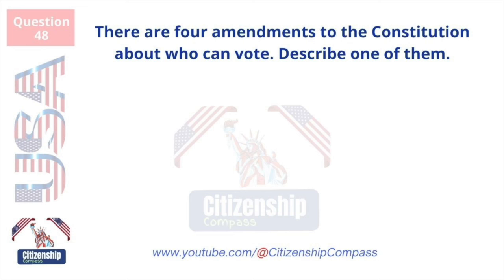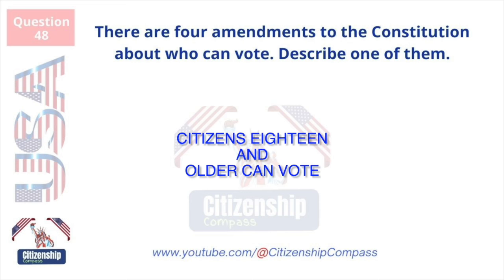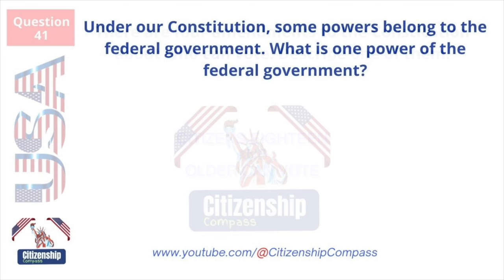There are four amendments to the Constitution about who can vote. Describe one of them. Citizens 18 and older can vote. Under our Constitution, some powers belong to the federal government. What is one power of the federal government? To print money.